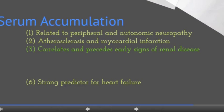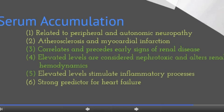Elevated serum accumulation of AGEs has been evidenced in peripheral and autonomic neuropathy, atherosclerosis and myocardial infarction, and precedes early signs of renal disease. It is also considered nephrotoxic, alters renal hemodynamics, and stimulates inflammatory processes — and has been demonstrated to be a strong predictor for heart failure.